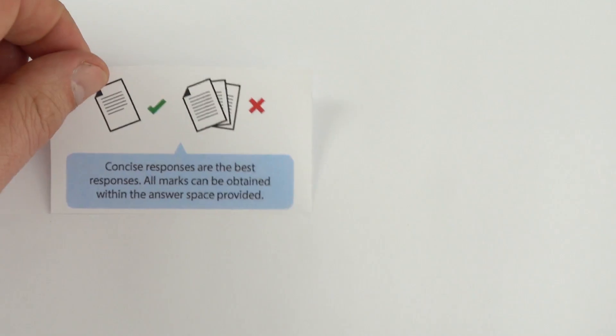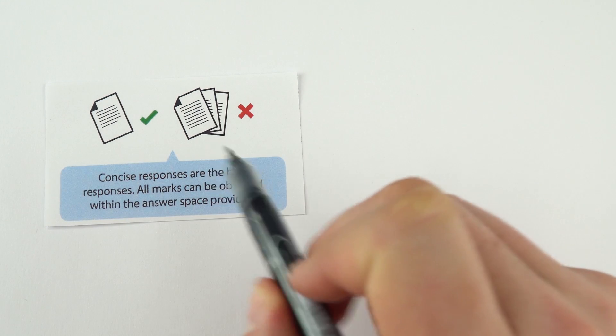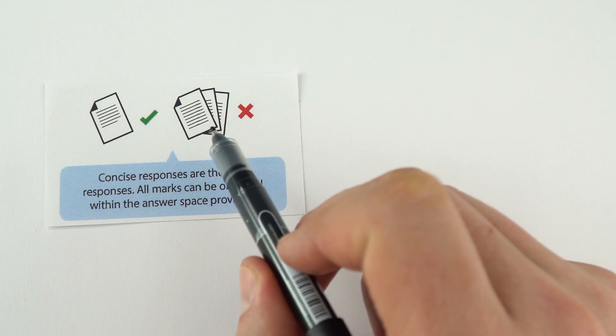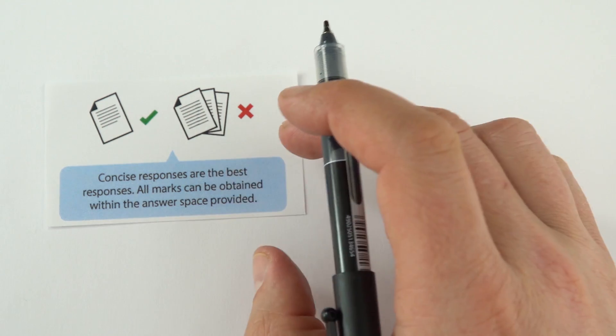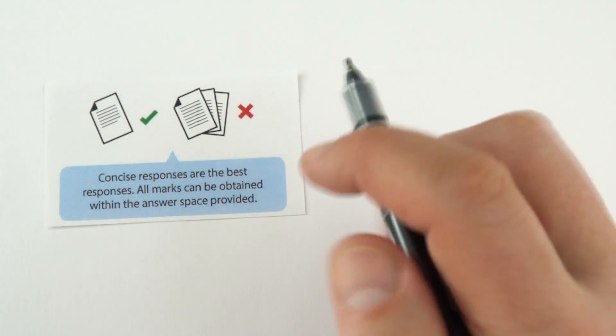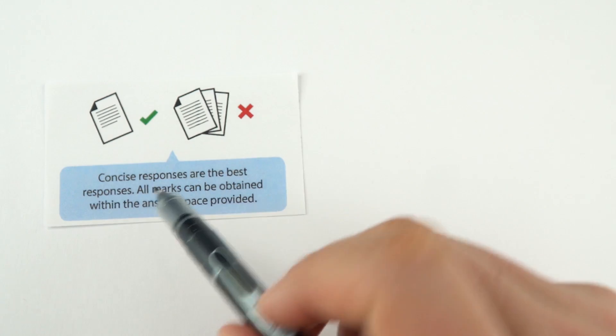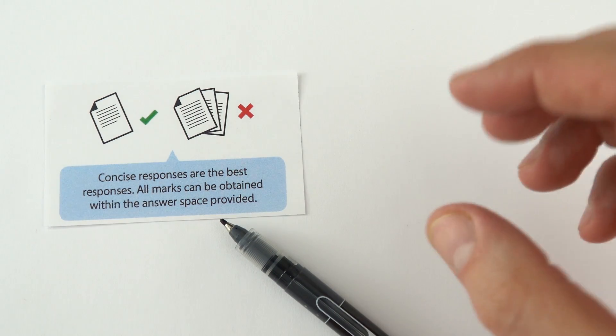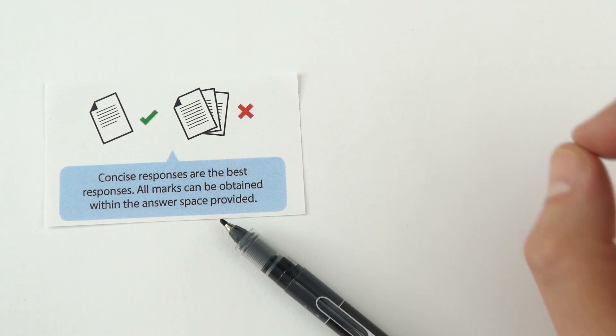Alongside making your answer clear, you've got to be concise, which means that you don't want to spend too much time writing too much down. If you're writing too much stuff down, it's taking you more time, which means you have less time for the other questions. It does say here that all marks can be obtained within the answer space provided. So if you're finding that you're having to use extra pages all the time, you're writing too much and you're not being clear and concise.